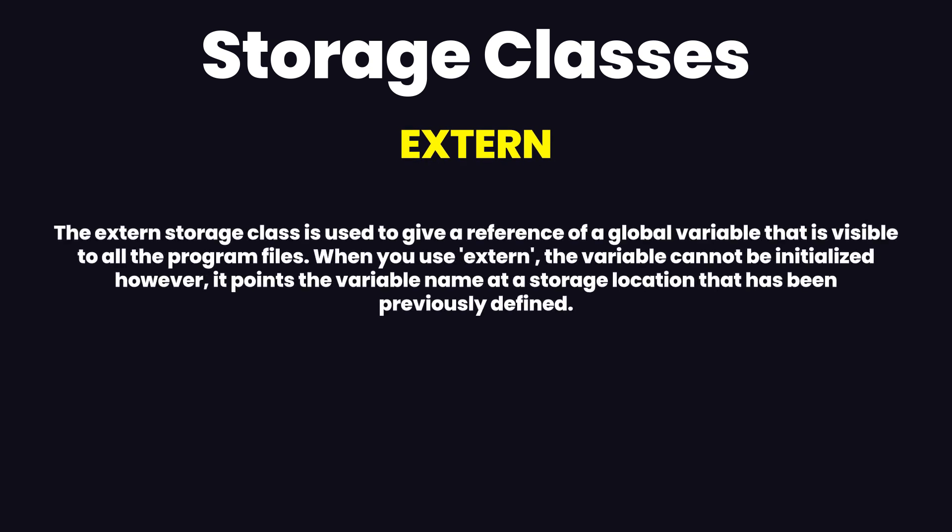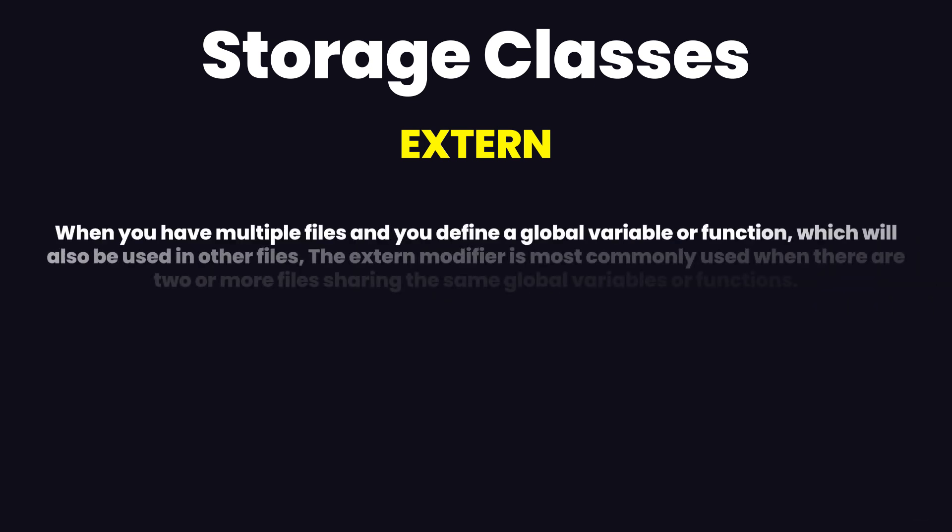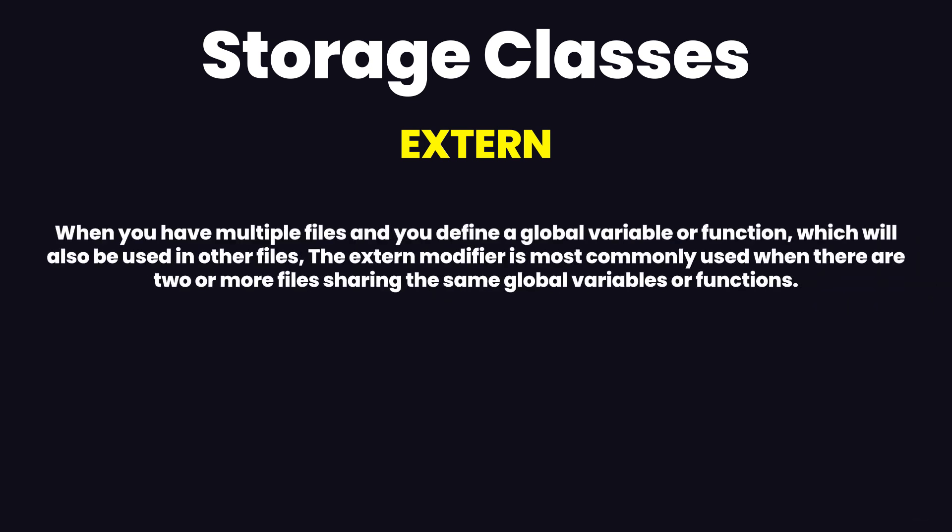The external storage class is used to give a reference of a global variable that is visible to all program files. When you use extern, the variable cannot be initialized; however, it points to the variable name at a storage location that has been previously defined. In summary, extern is used to declare a global variable or function in another file.